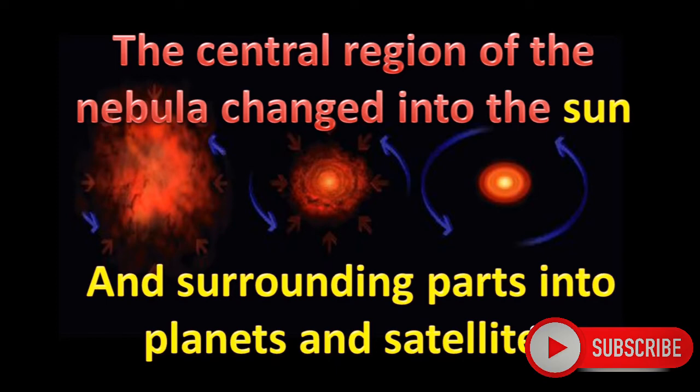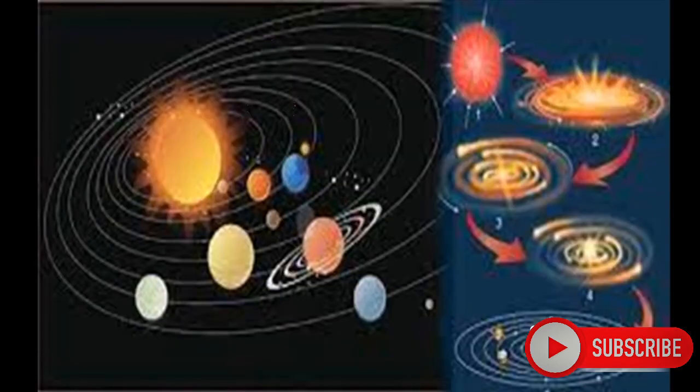The surrounding masses start to revolve around the central part, or the sun. In this way, finally, our solar system was formed.